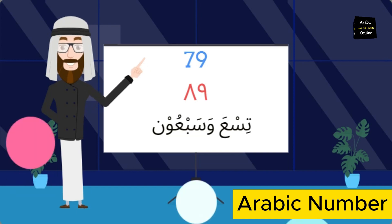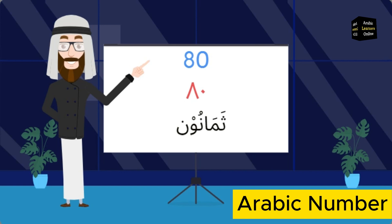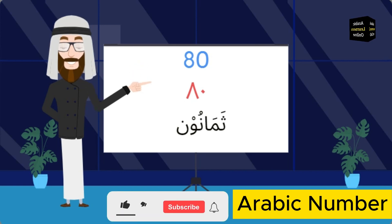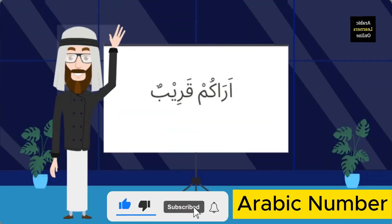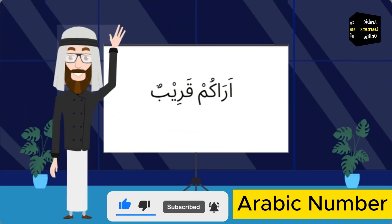Eighty: ثمانون (thamaanoon). أراكم قريبا — See you soon.